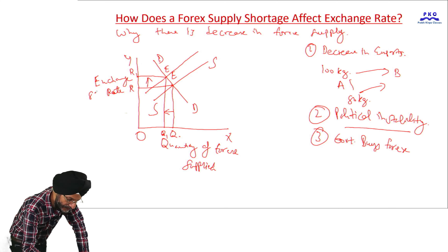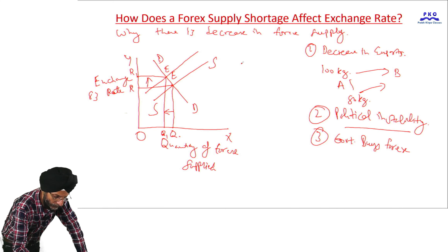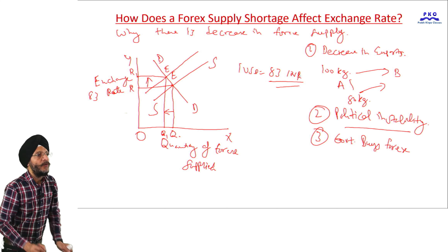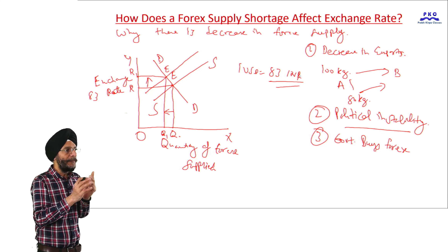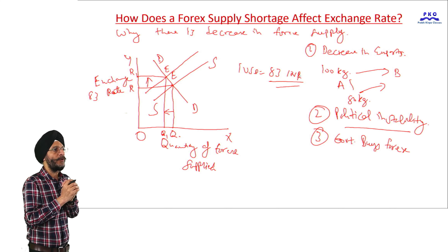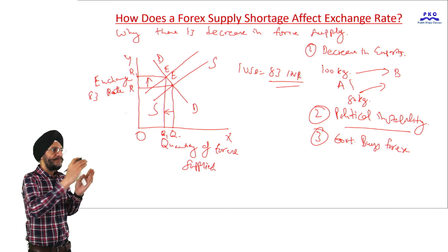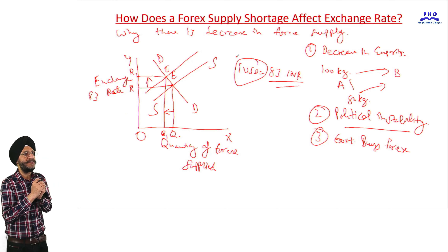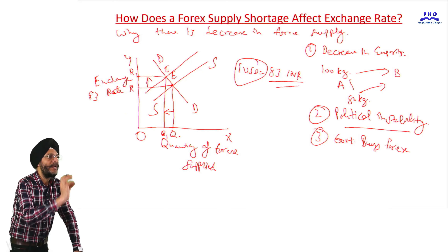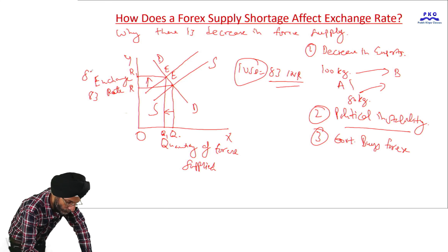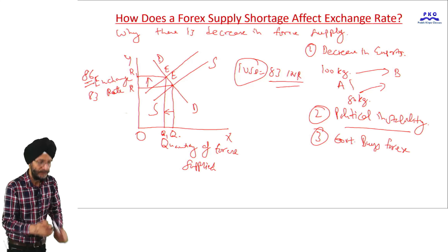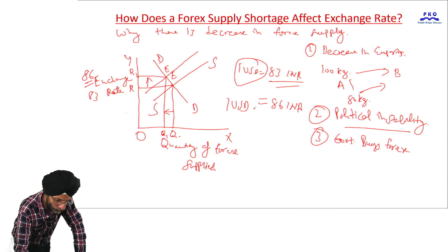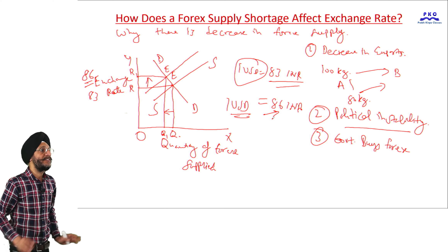Earlier, say the exchange rate was 83 — taking the example of 1 US dollar equal to 83 INR. It means that to get 1 US dollar, people living in India had to pay 83 Indian rupees. But when the supply of US dollars has decreased and the exchange rate has increased, now we have to pay, say, 86 rupees to get 1 US dollar.